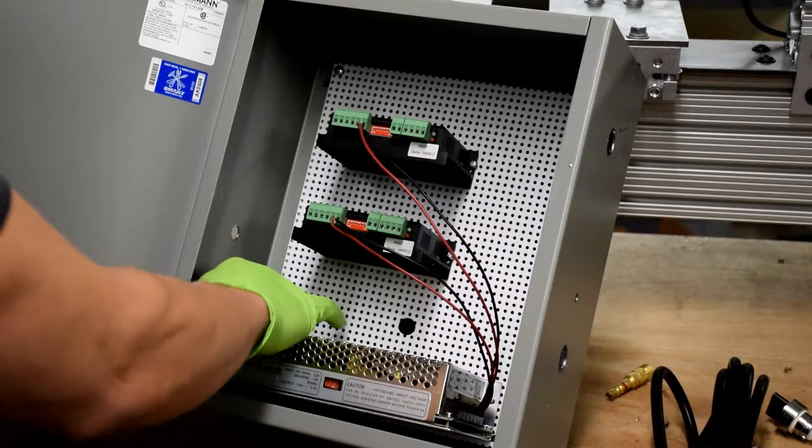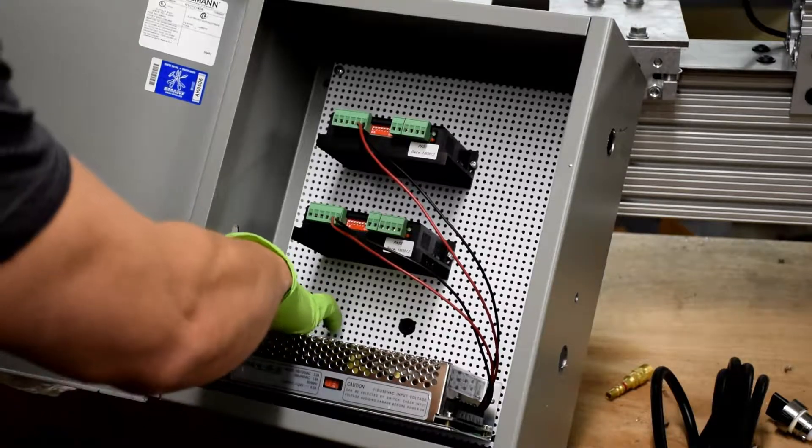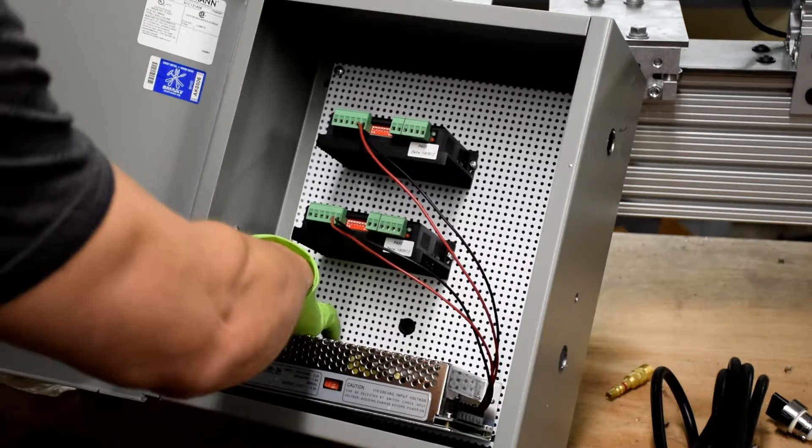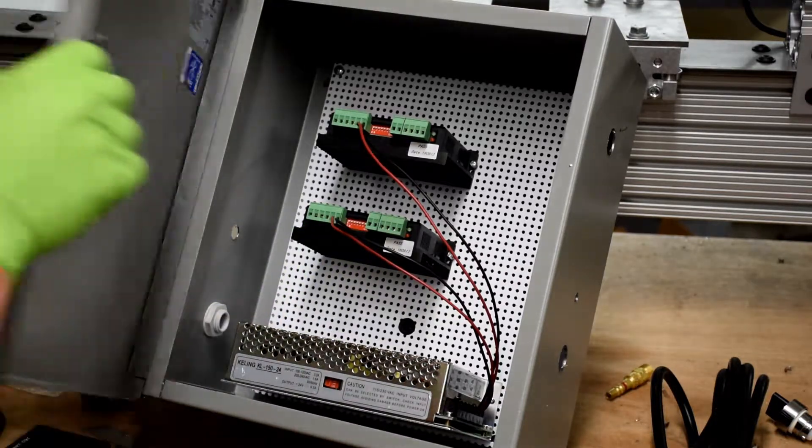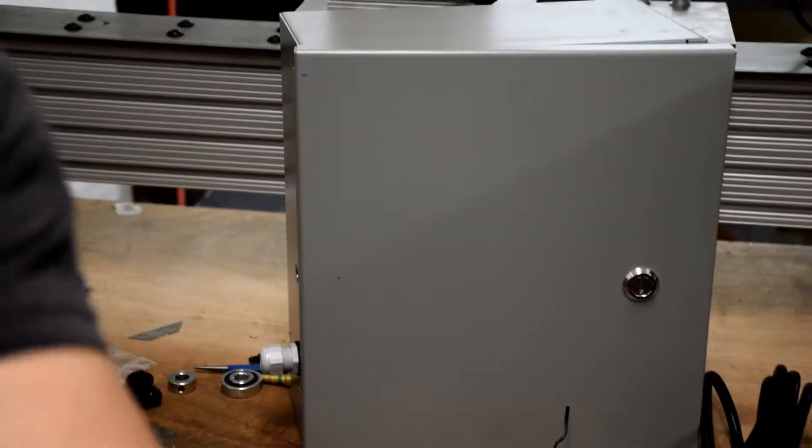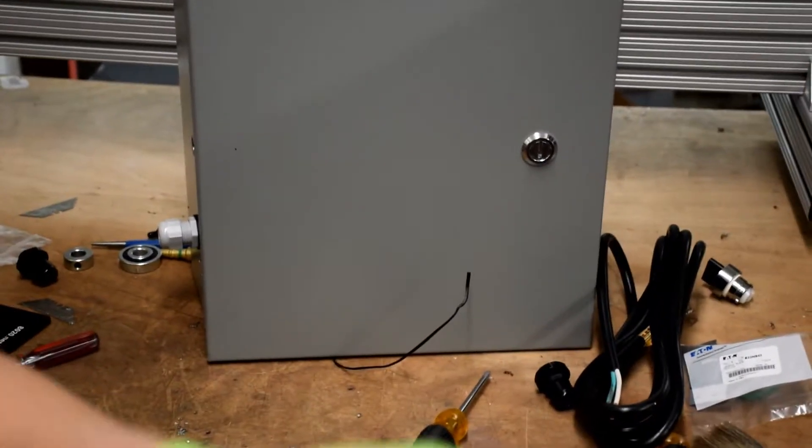You can actually get this thing pretty tight by hand by both turning the nut inside the enclosure and turning the strain relief on the outside. If you want to, you can put a wrench on that nut and just give it another half turn, but it's plastic, so be careful. And there we are.